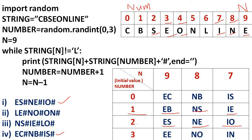When the random number generated is 3: number is 3, n is 9. string[9]='e', string[3]='e', gives 'ee#'. Then number increments to 4, n decrements to 8: string[8]='n', string[4]='o', gives 'no#'. Then number increments to 5, n decrements to 7: string[7]='i', string[5]='n', gives 'in#'. So output is 'ee#no#in#'. Checking the options — this output is not there.